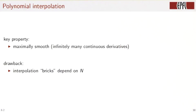The key property of polynomial interpolation is that it's maximally smooth. You can take infinitely many derivatives. The drawback is that the interpolation bricks, each piece we add, depends on n, and each piece actually looks different.